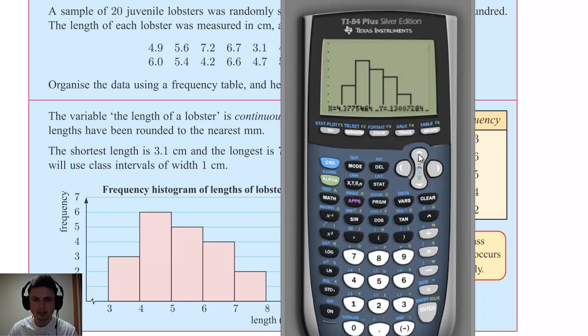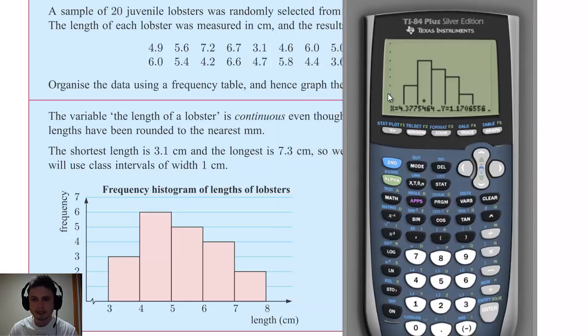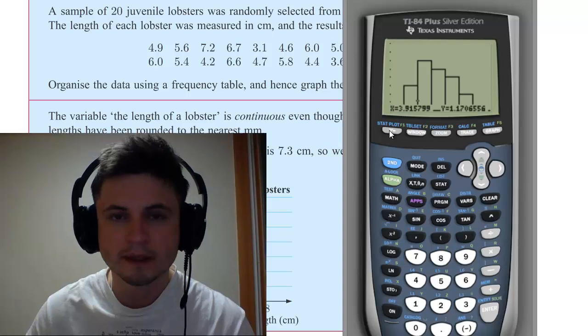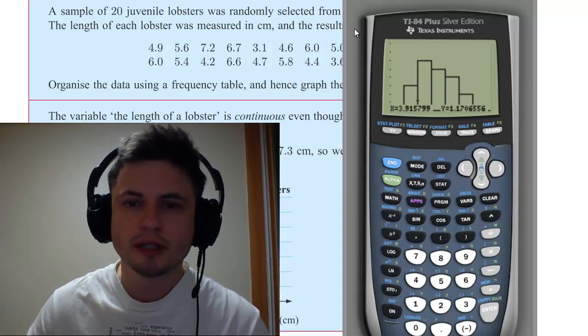Because if you're unable to graph the frequency histogram, you can do it on the calculator first and then basically copy your work from the calculator onto your paper. And this is basically it.